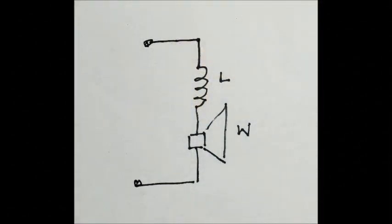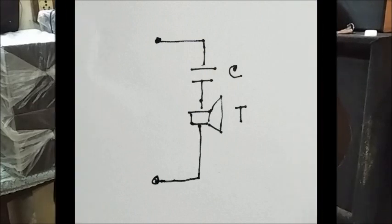In a two-way speaker system we use a woofer for low frequency and a tweeter for high frequency response. To eliminate high frequency we use an inductor coil in series with the woofer. Accordingly, we use a capacitor in series with the tweeter to block low frequency.